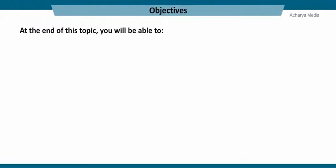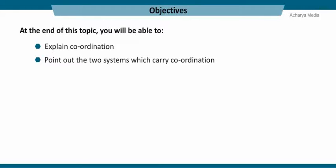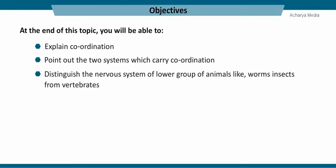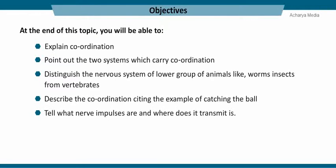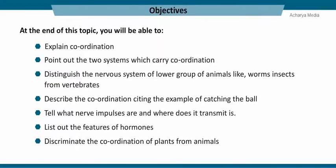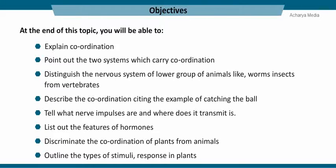At the end of this topic, you will be able to explain coordination, point out the two systems which carry coordination, distinguish the nervous system of lower group of animals like worms and insects from vertebrates, describe coordination citing the example of catching the ball, tell what nerve impulses are and where they are transmitted, list out the features of hormones, discriminate the coordination of plants from animals, and outline the types of stimuli responses in plants.